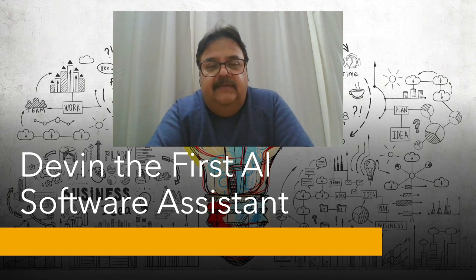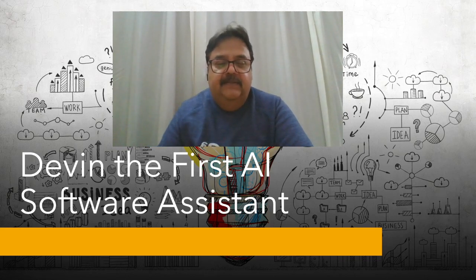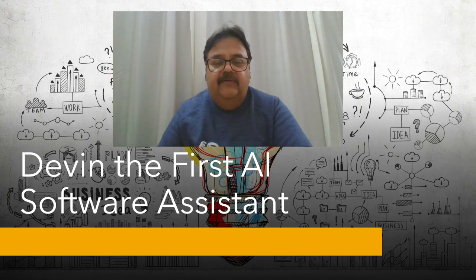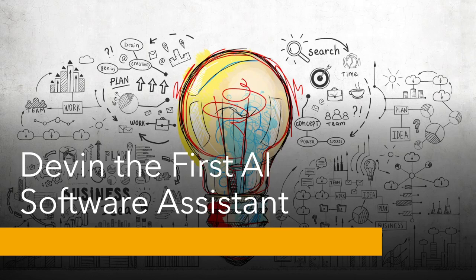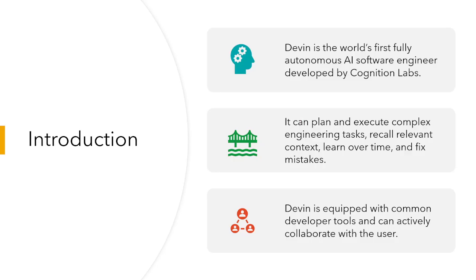I found it very, very interesting and thought that one day the future would always be cognitive. So it has come now, and in the name you can see Devin — it is the first AI software engineer. As you can see, Devin is the world's first fully autonomous AI software and it is developed by Cognition Labs.